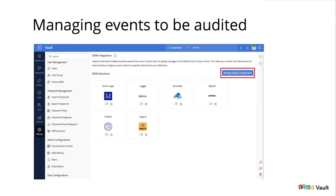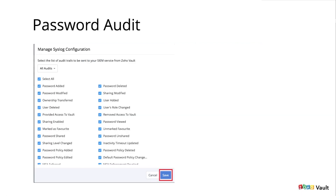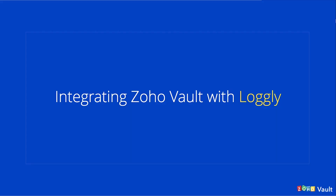Once you click on the manage configuration button, you can choose the events you want to audit. Honestly, I would suggest you keep all of these enabled, because you can always filter them out later in the dashboards. Generally this will never take up that much ingestion volume, so you'll be more than fine keeping all of them enabled. Of course you can disable them if you don't need them, based on your use case.